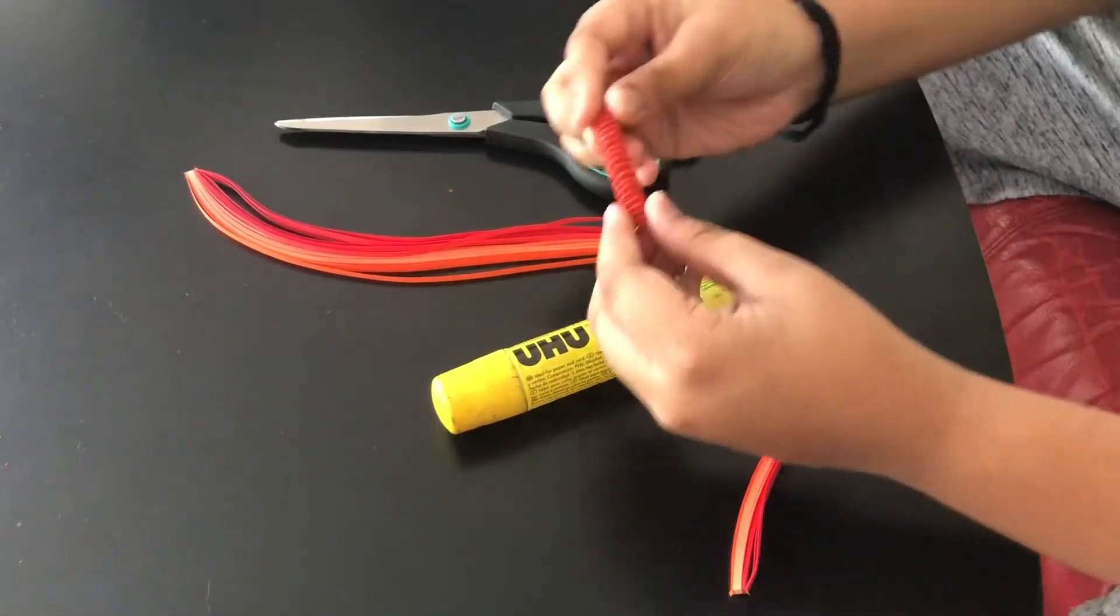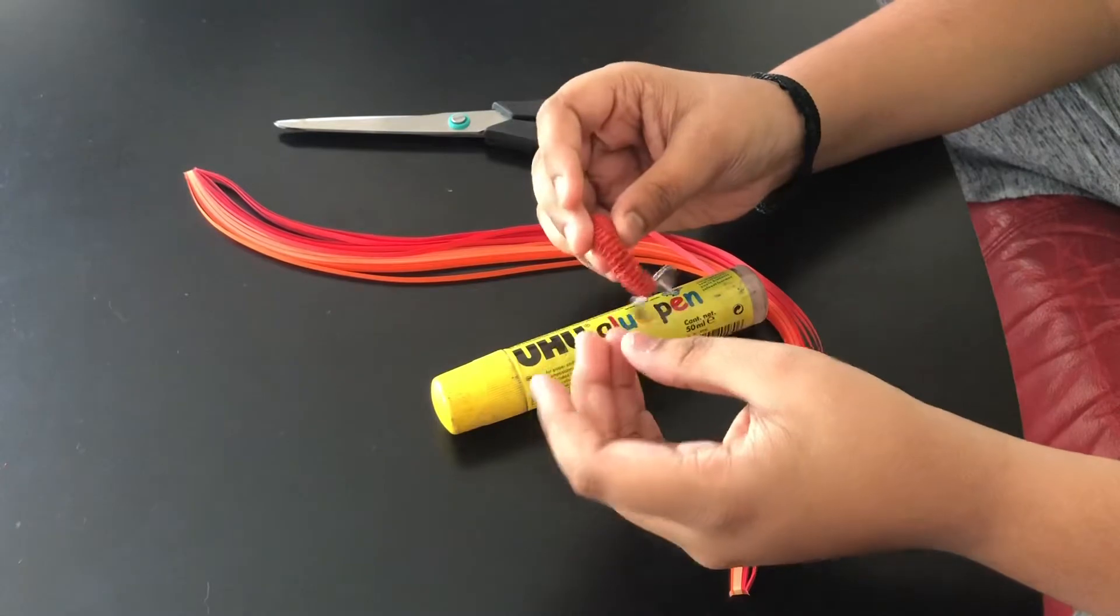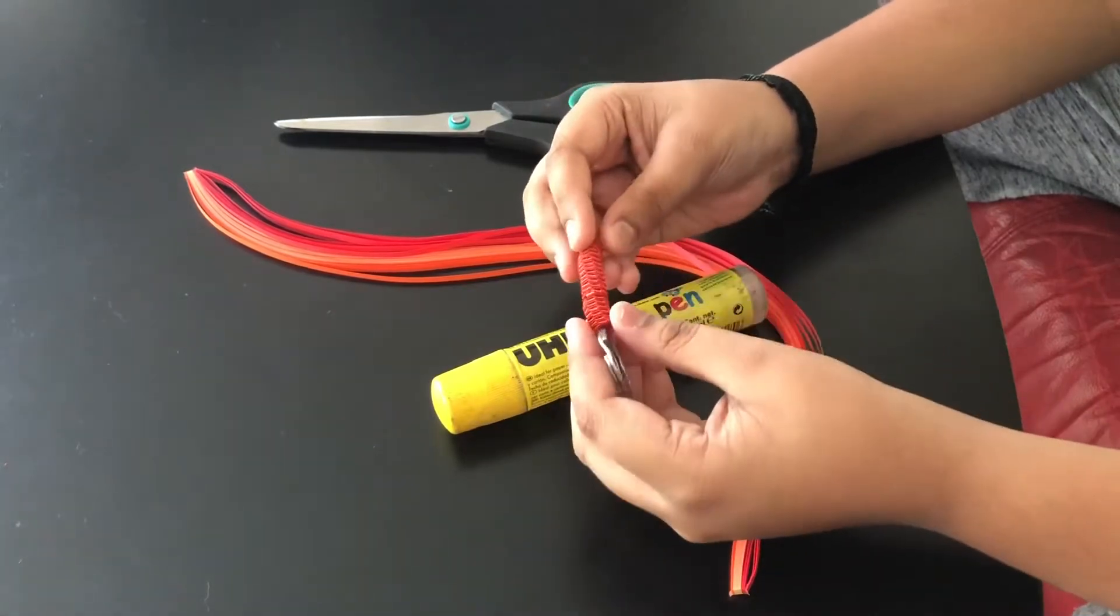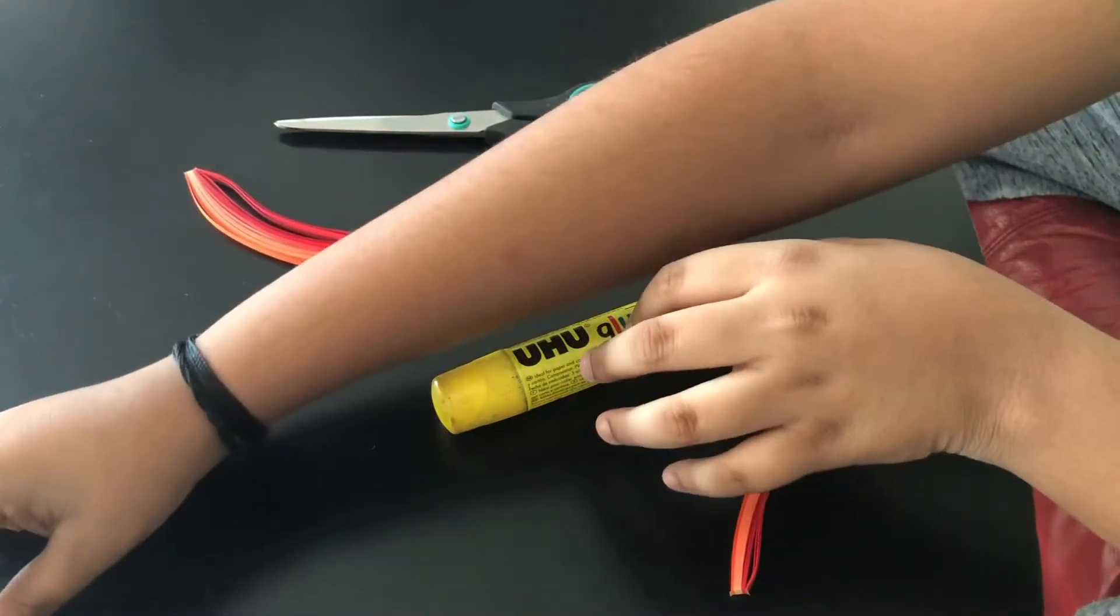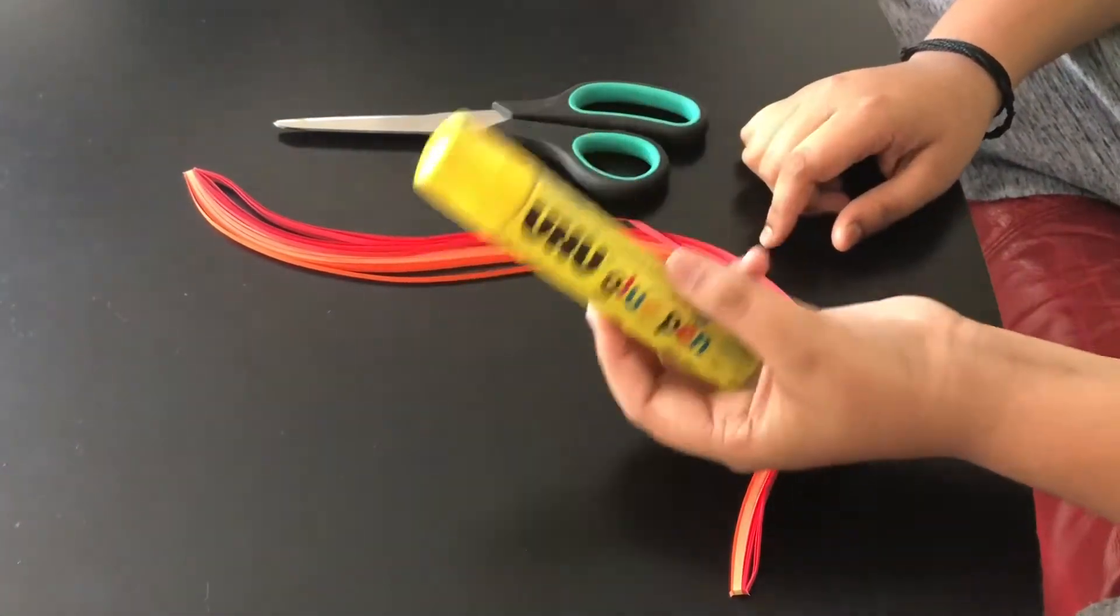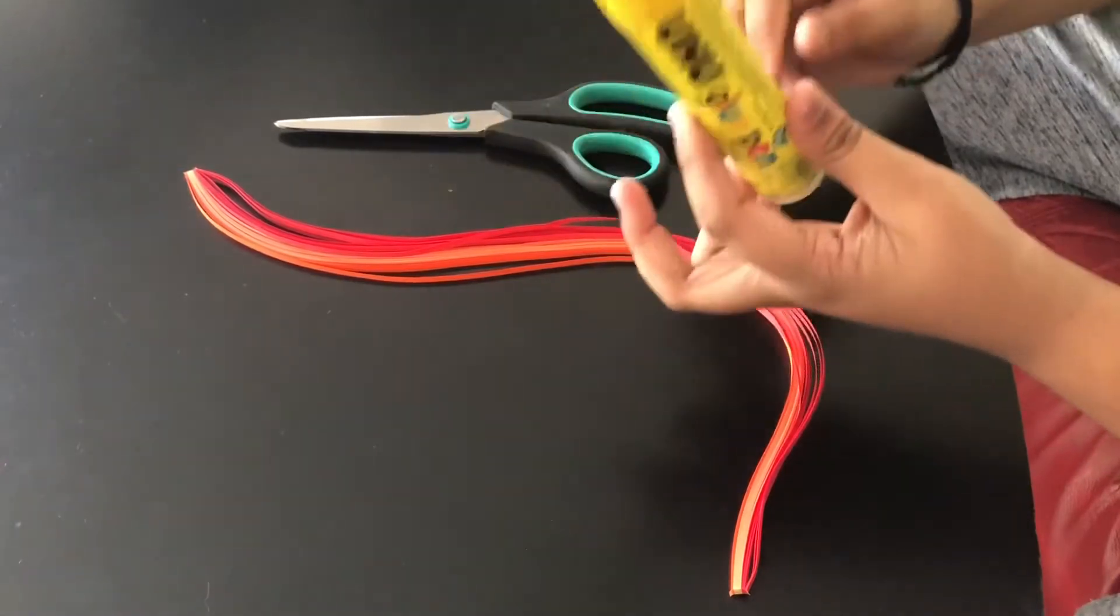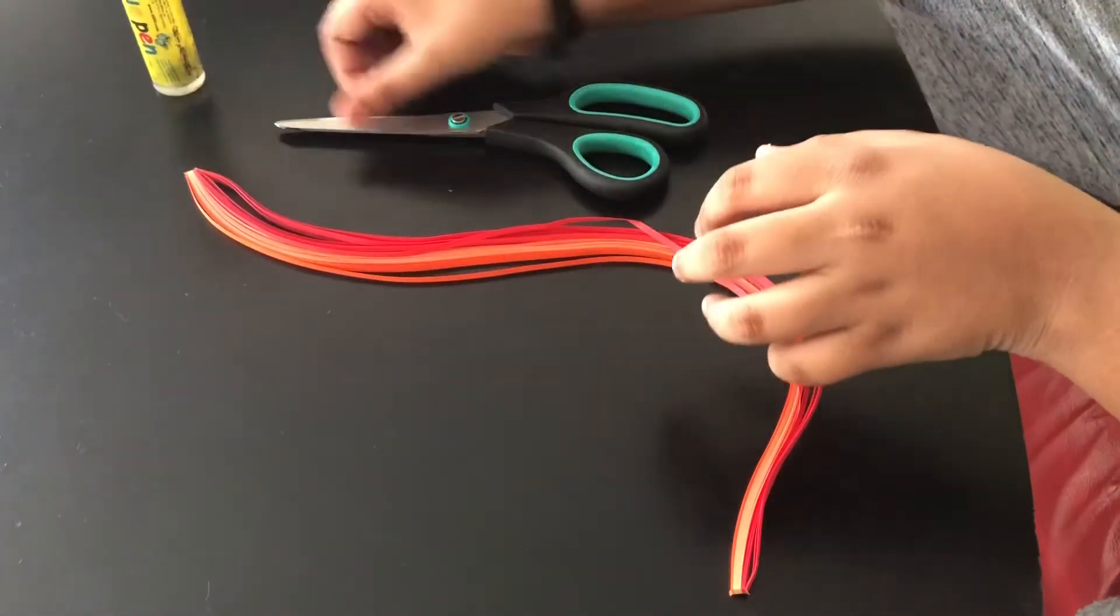So guys, here is the slinky we are going to be making today. Then the things we need will be explained by me now. Let's set that aside. We need some kind of glue to stick it with. I am using Uhu glue. It is a good kind of glue. So then we need some scissors.